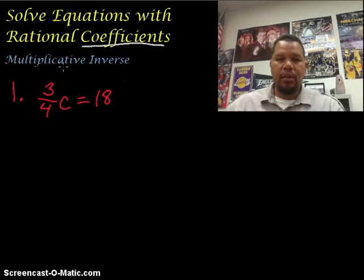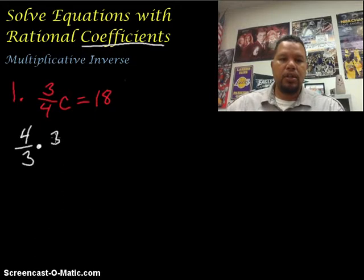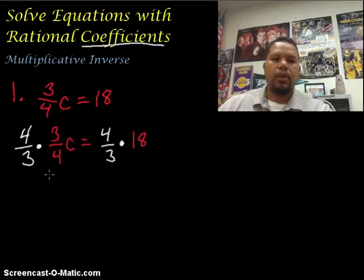So we are going to use this term right here, the multiplicative inverse. The multiplicative inverse of 3 fourths is its reciprocal, and the reciprocal of 3 fourths is 4 thirds. So we're going to multiply by 4 thirds to both sides of the equation. I'm using the property of equality, the multiplication property of equality, because if I multiply the left side by some number, I have to multiply the right side by that same number to keep it nice and balanced.